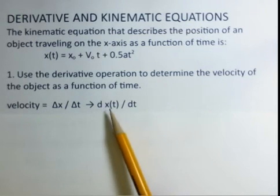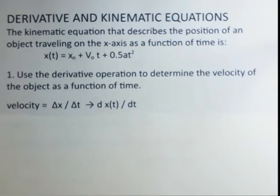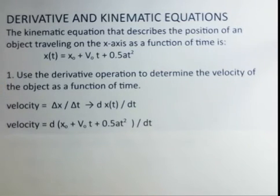If we want to find the instantaneous velocity, then we use the derivative. The derivative of the position as a function of time with respect to the time.